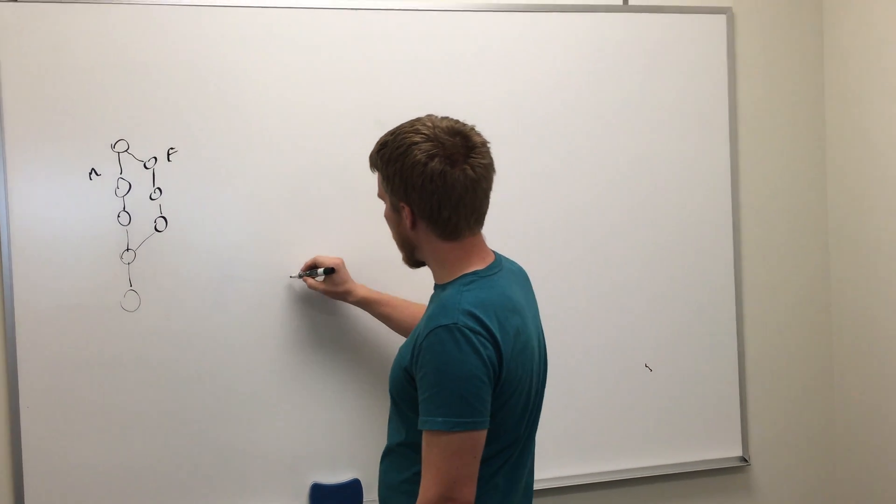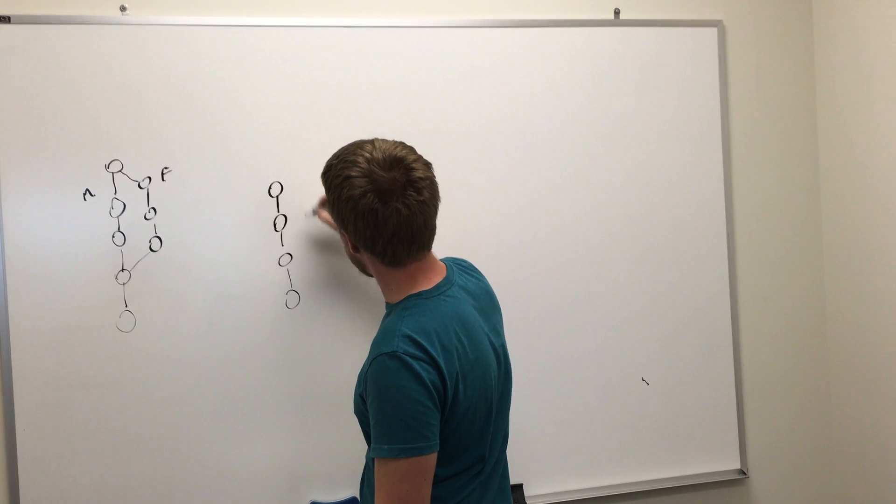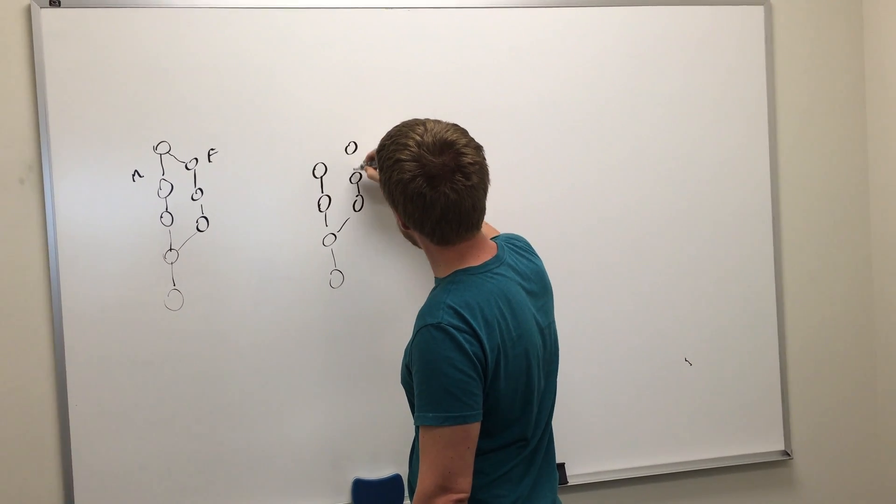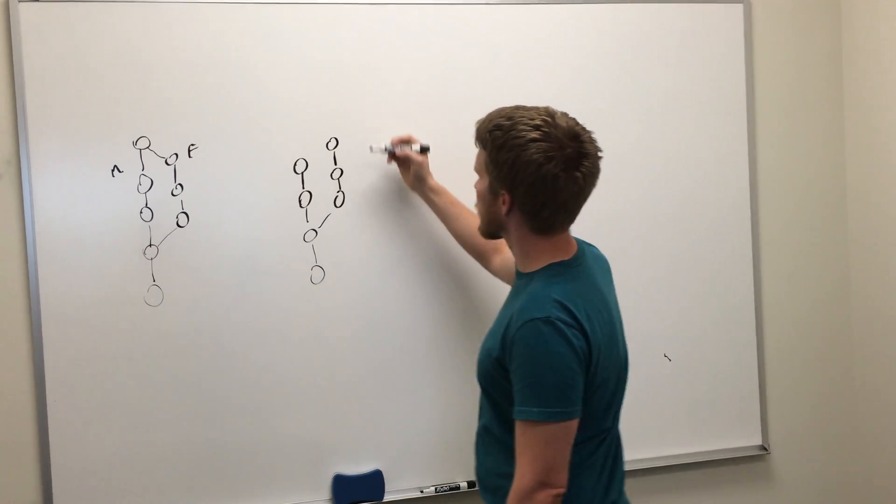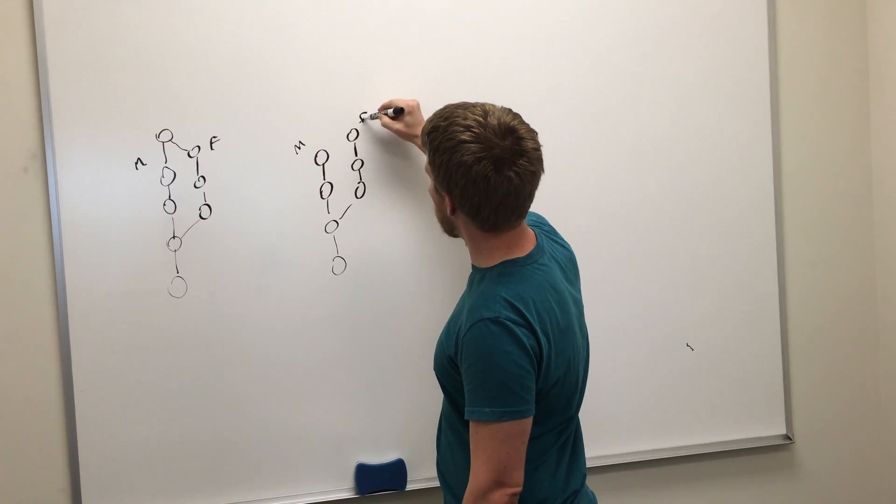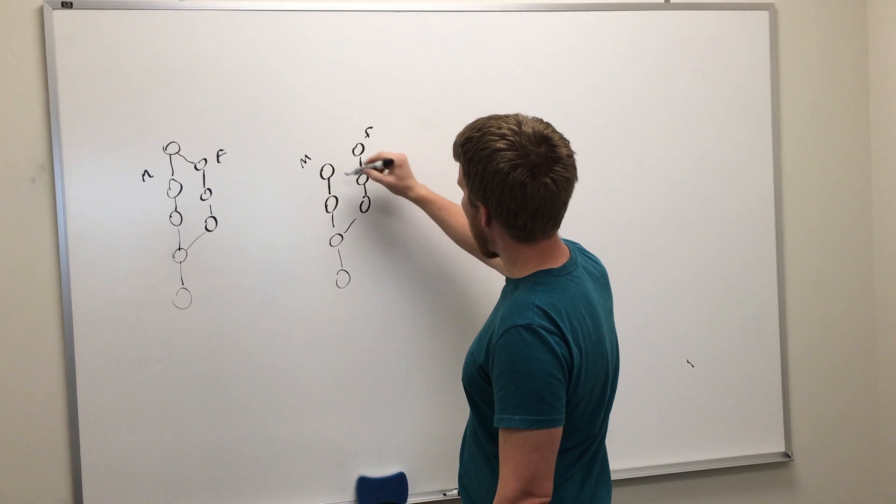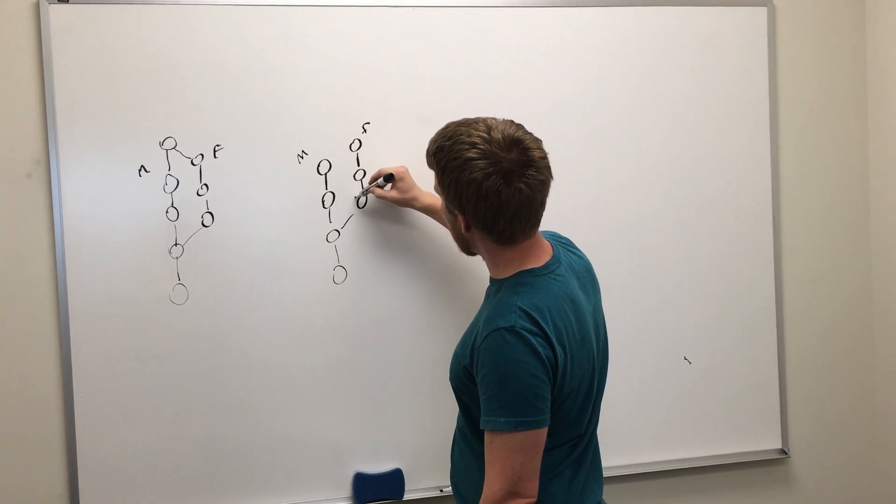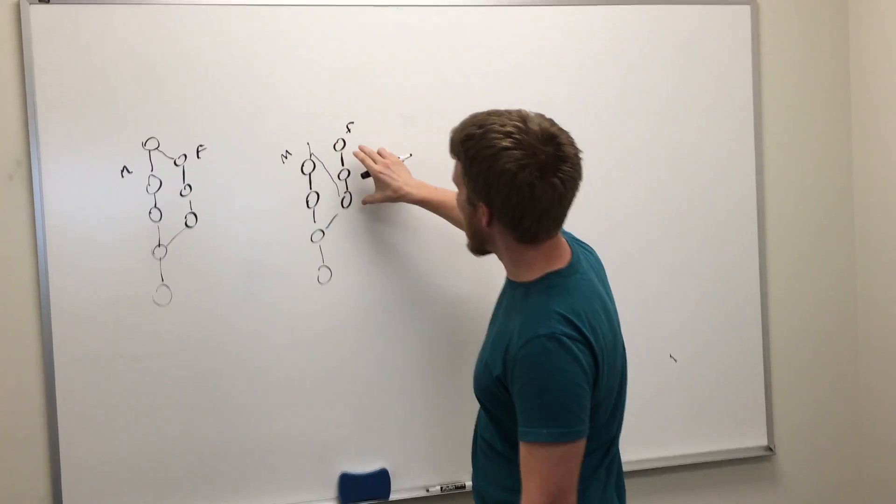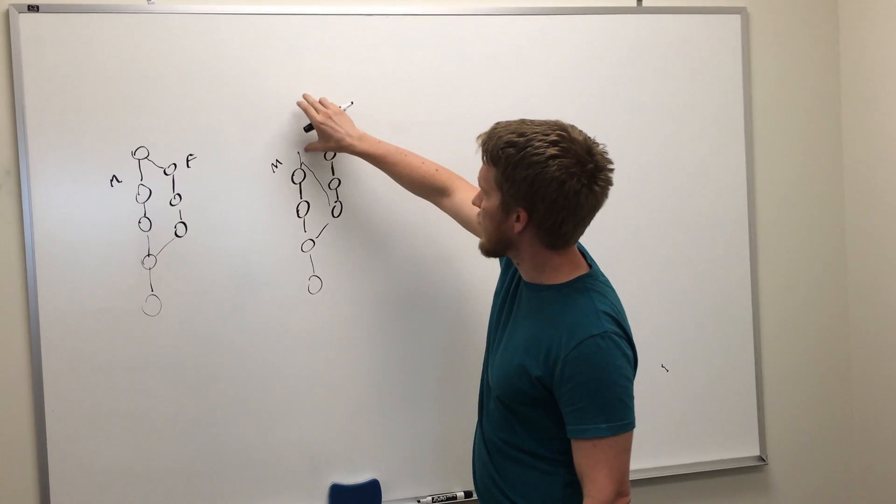So the difference with rebasing - let me draw these branches again. Basically what we're doing with rebasing is we're changing the structure of the feature branch, where we're taking all these commits that happened and moving them on top of the master branch. So this tree actually changes. It takes this feature branch and moves it on top of the master branch.